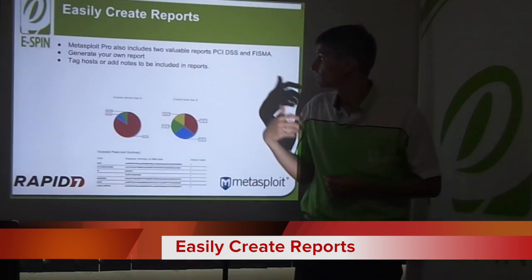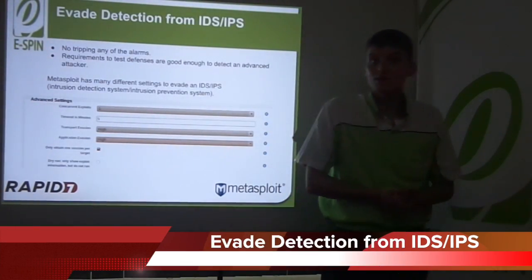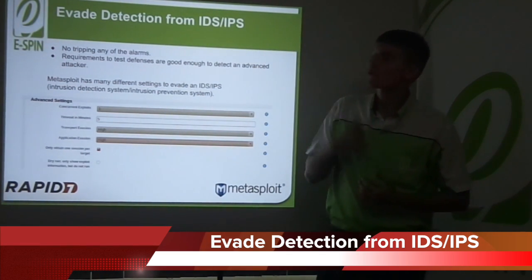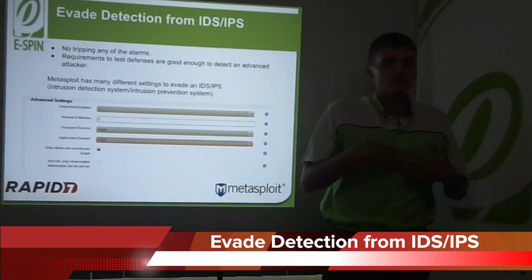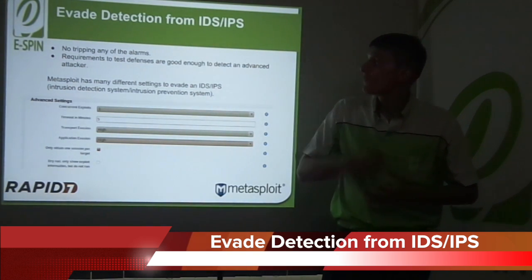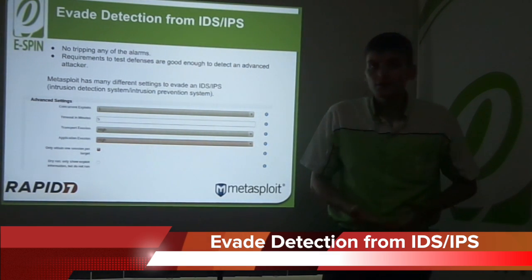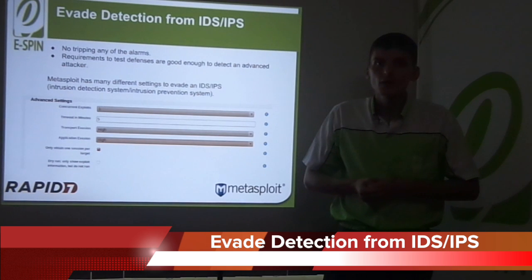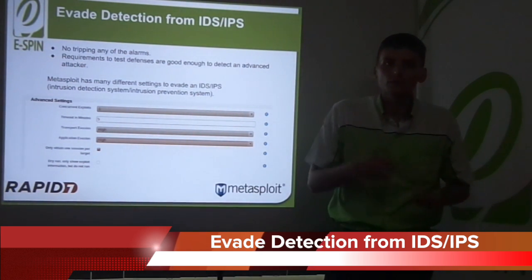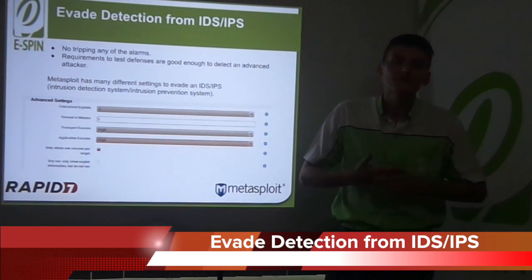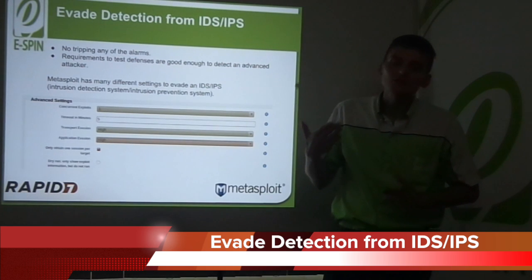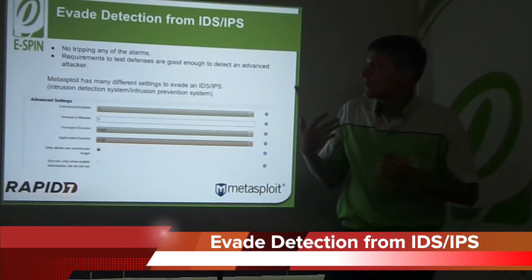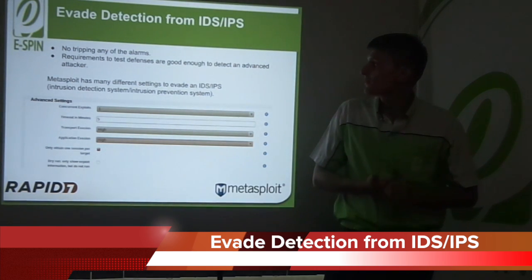We will also talk about evading detection from IDS and IPS. Nowadays, enterprise requirements include doing penetration testing without alerting the defenses, and testing whether defenses are good enough to detect attackers. Metasploit has many different settings to evade detection from IDS and IPS — intrusion detection system and intrusion prevention system.